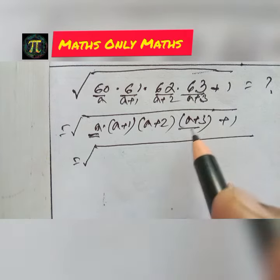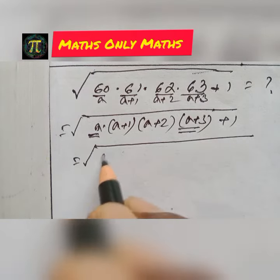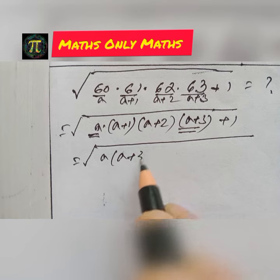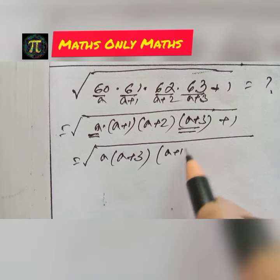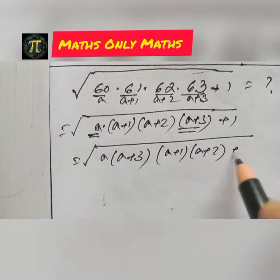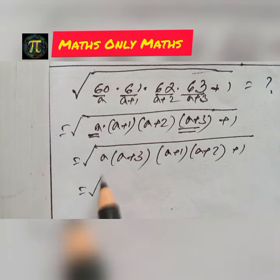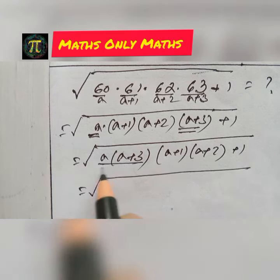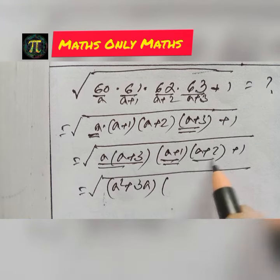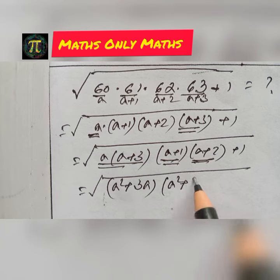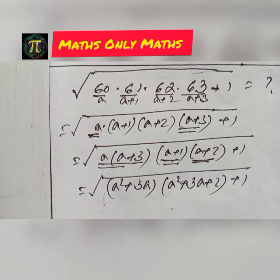I rewrite it as √(a(a+3) × (a+1)(a+2) + 1). Expanding: a(a+3) = a²+3a, and (a+1)(a+2) = a²+3a+2. So we have √((a²+3a)(a²+3a+2) + 1).